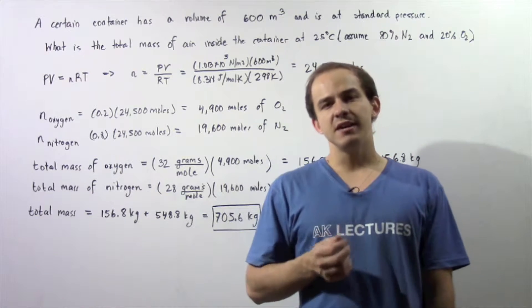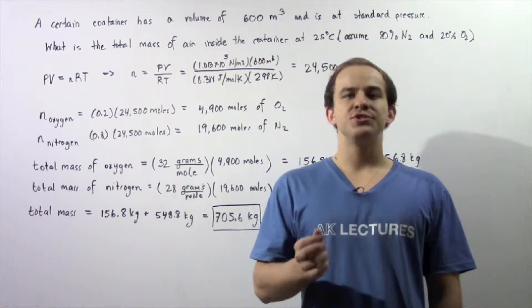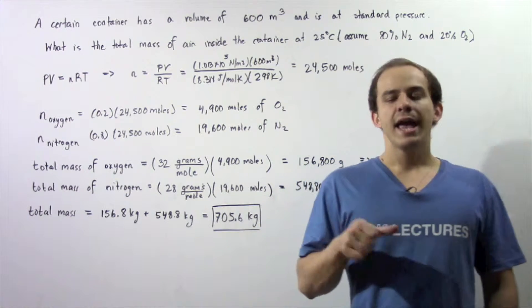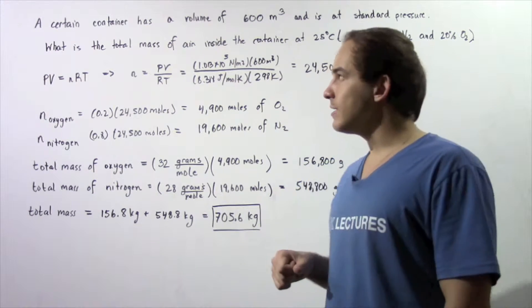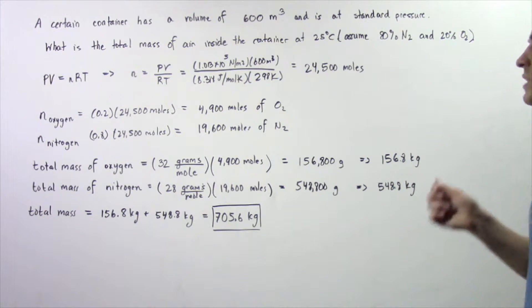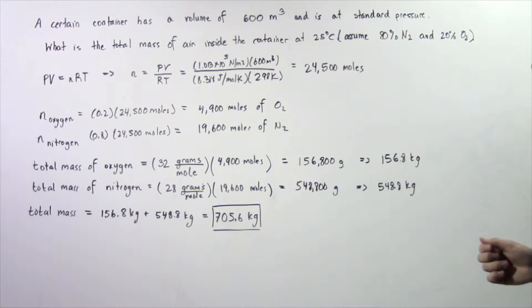So let's examine the following example in which we're going to use the ideal gas law to determine the total mass of air inside a given container. A certain container has a volume of 600 meters cubed and is at standard pressure.